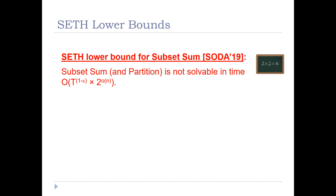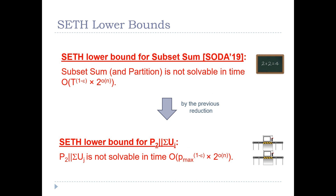This lower bound says that for any epsilon, an algorithm for subset sum running in T^{1-epsilon} must also pay an additional runtime of 2^{constant * n}. In other words, there is no algorithm solving subset sum or partition in T^{1-epsilon} * 2^{o(n)}. Combining this with the reduction from partition to our scheduling problem gives a lower bound for P2|sigma|Uj under SETH: P2|sigma|Uj cannot be solved in O(p_max^{1-epsilon} * 2^{o(n)}).